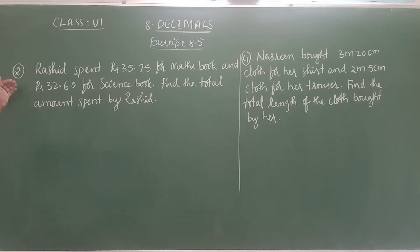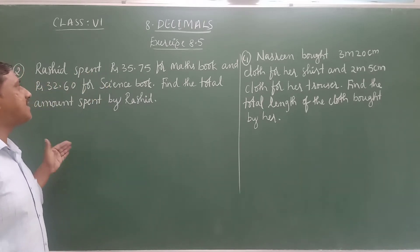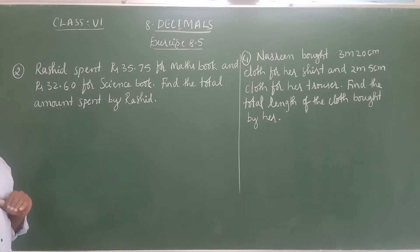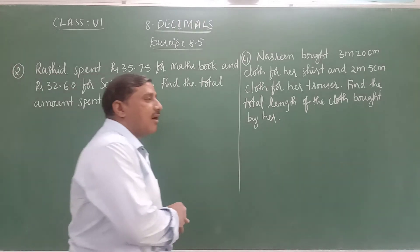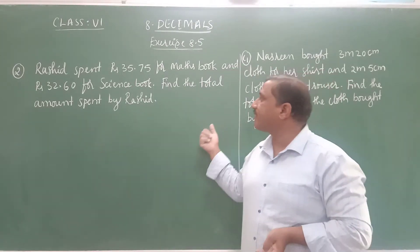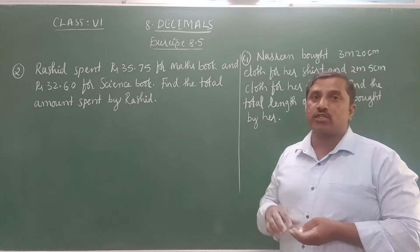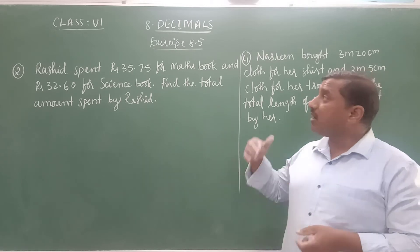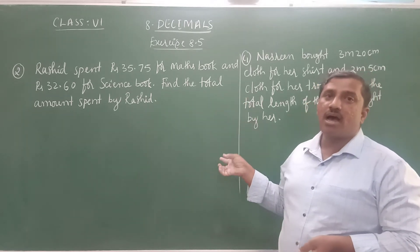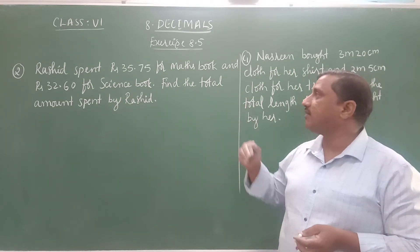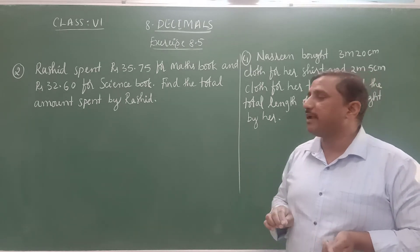Now we will discuss some word problems from exercise 8.5. Second question: Rasheed spent rupees 35.75 for a maths book and rupees 32.60 for a science book. Find the total amount spent by Rasheed. He bought two books at different prices. The total amount spent means the sum of the amount spent on the maths book and the amount spent on the science book — that is, the total cost of the two books.